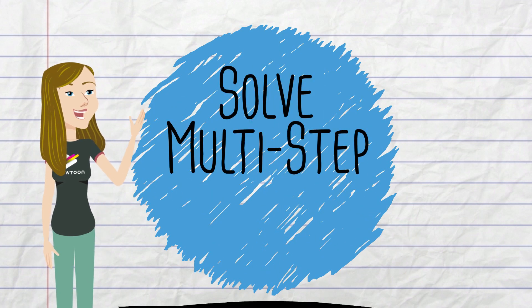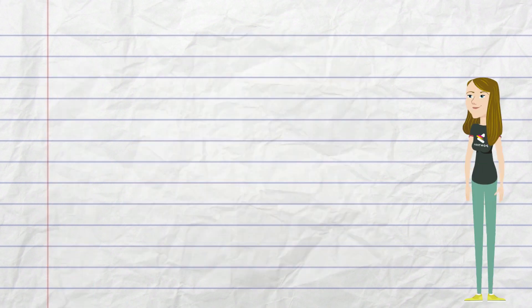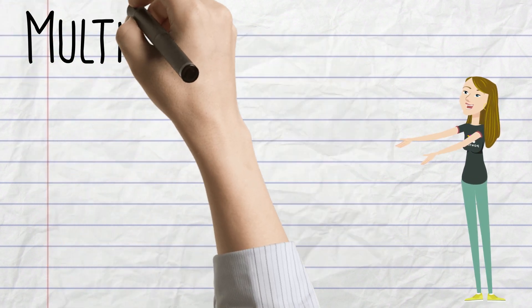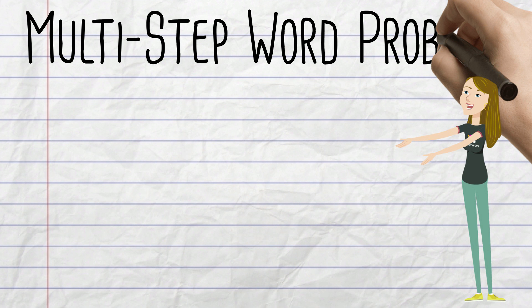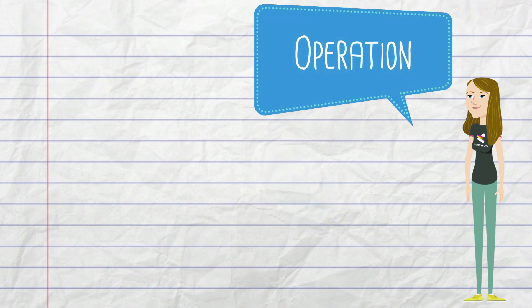Today, we are going to learn how to solve multi-step word problems. A multi-step word problem is like a puzzle with lots of pieces. Multi-step word problems are math problems that have more than one operation. An operation is like addition, subtraction, multiplication, or division.